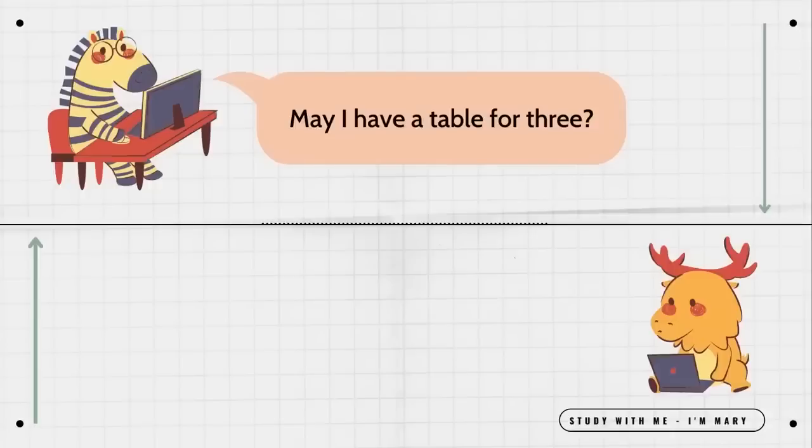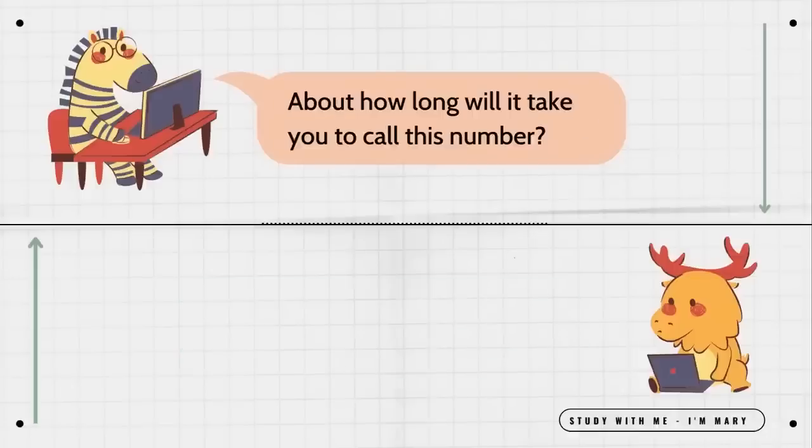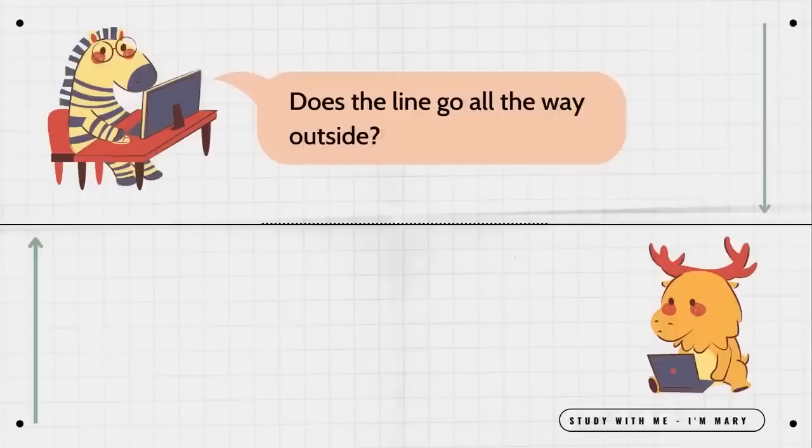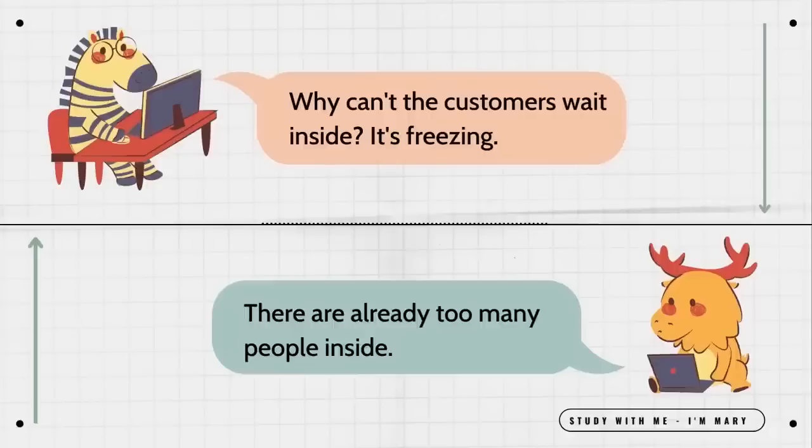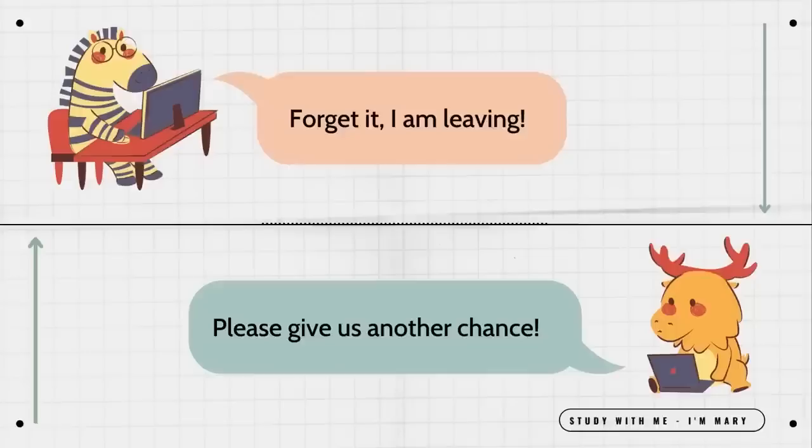May I have a table for three? Of course. Here is your number. About how long will it take you to call this number? About one hour. Wow. That is really a long time. I apologize for the long wait. Does the line go all the way outside? Yes. I apologize again. Why can't the customers wait inside? It's freezing. There are already too many people inside. Forget it. I'm leaving. Please give us another chance. Okay.